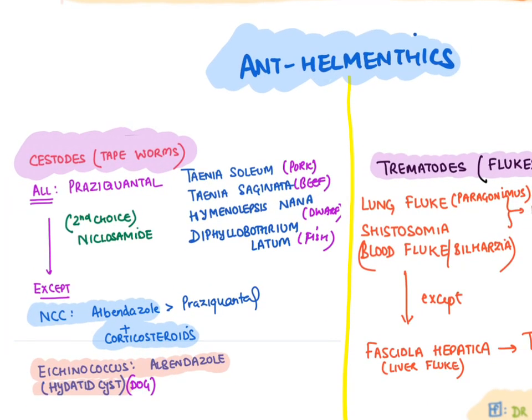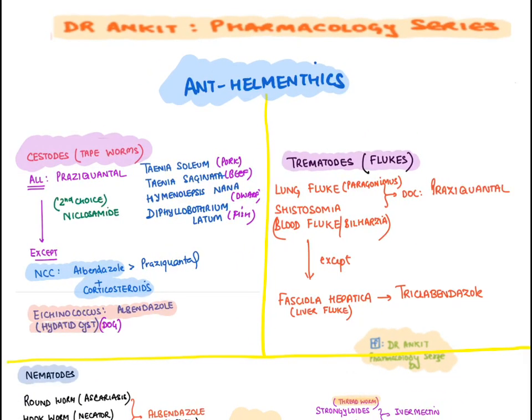For all cestodes, praziquantel is the drug of choice: Taenia solium (pork tapeworm), Taenia saginata (beef tapeworm), Hymenolepis nana (dwarf tapeworm), Diphyllobothrium latum (fish tapeworm) — with niclosamide as second choice. Exceptions: neurocysticercosis uses albendazole with corticosteroids; Echinococcus (hydatid cyst/dog tapeworm) uses albendazole.